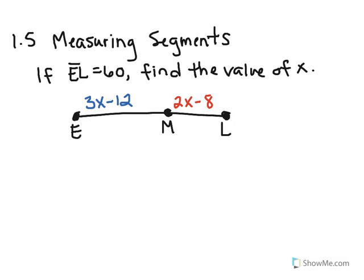This is lesson 1.5 about measuring segments. Since we already know what segments are, we're going to learn about a postulate that tells me that if I've got two segments here, such as EM and ML, that are connected together, then the sum of those two segments should equal the entire length of the segment.